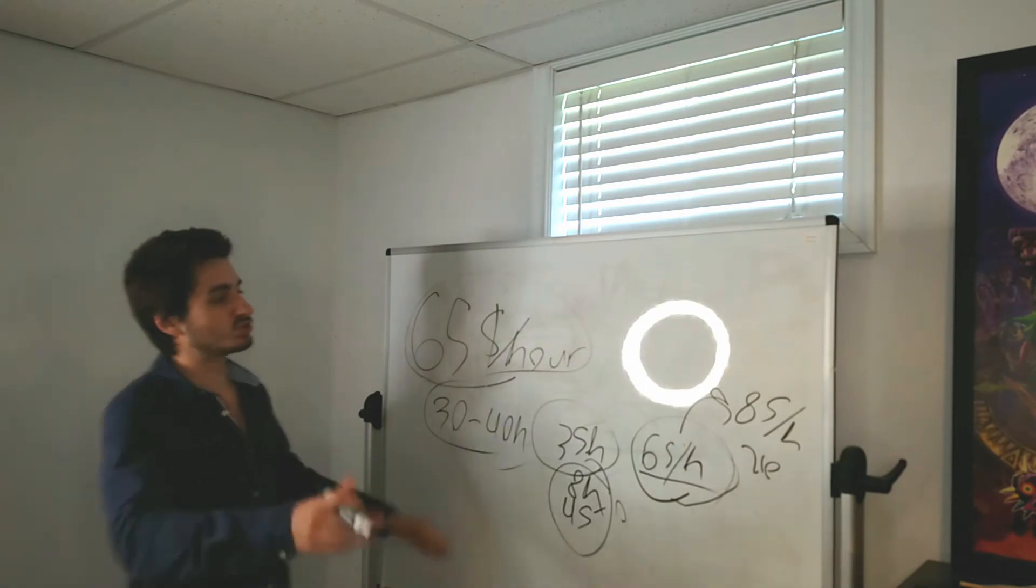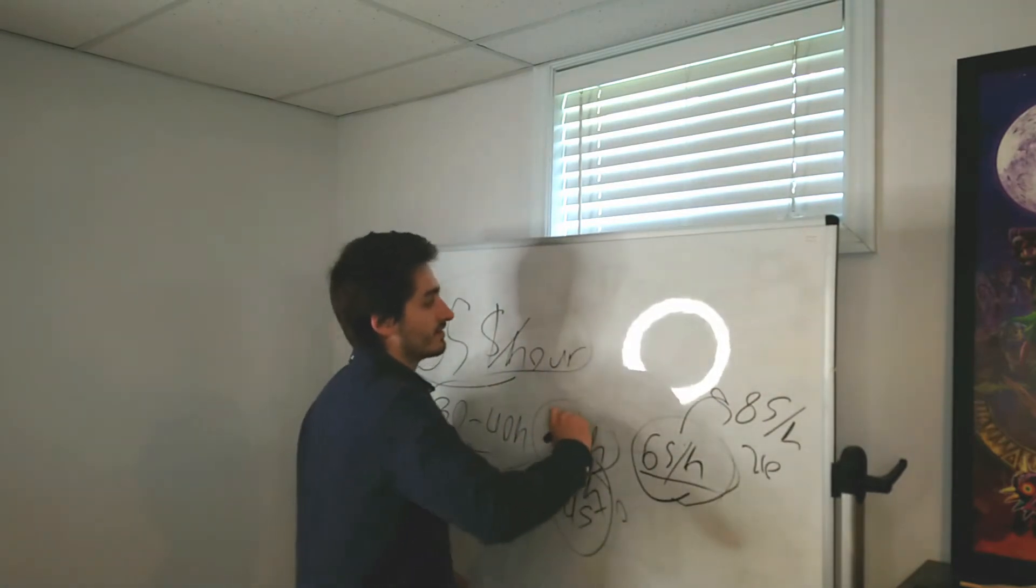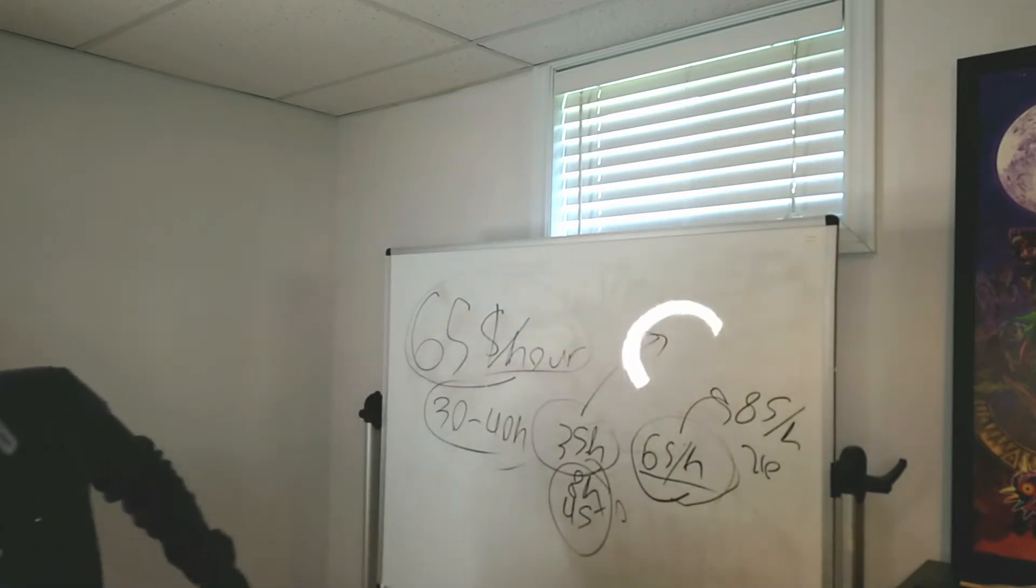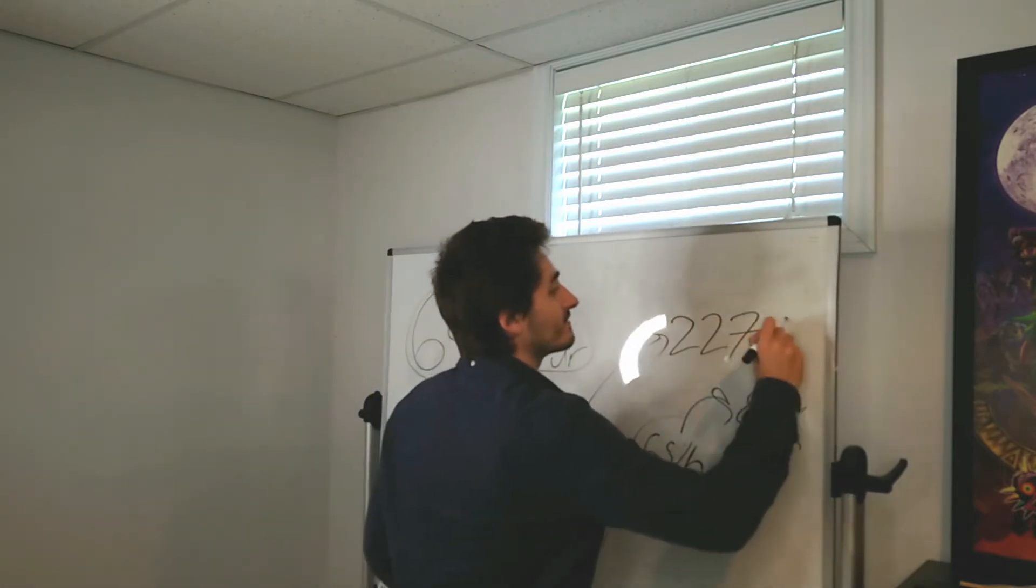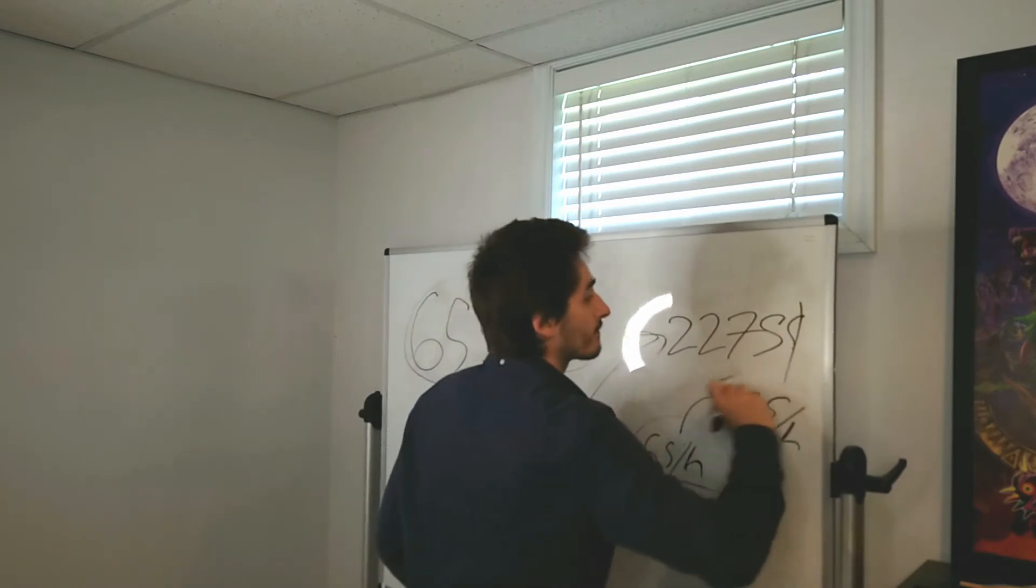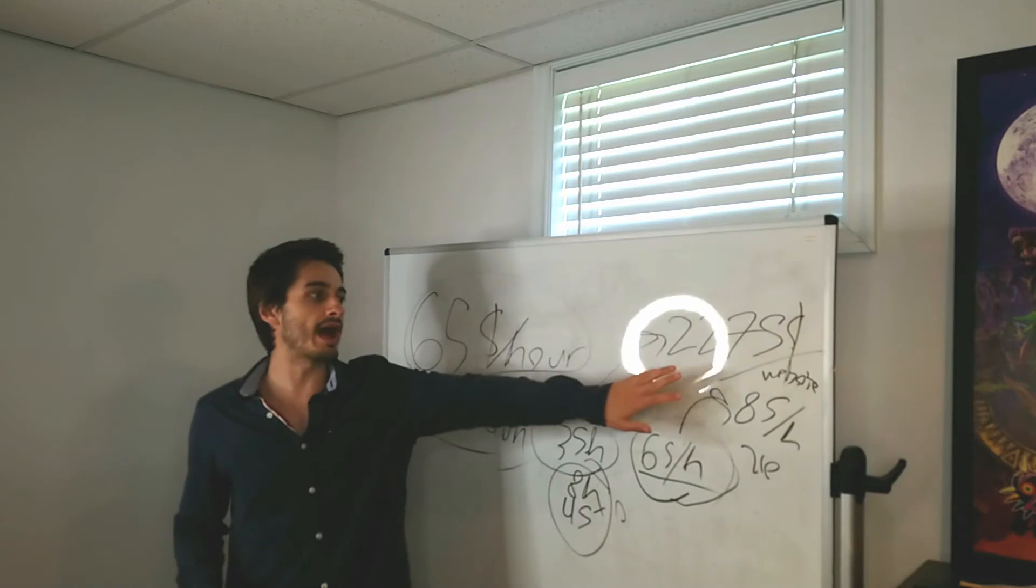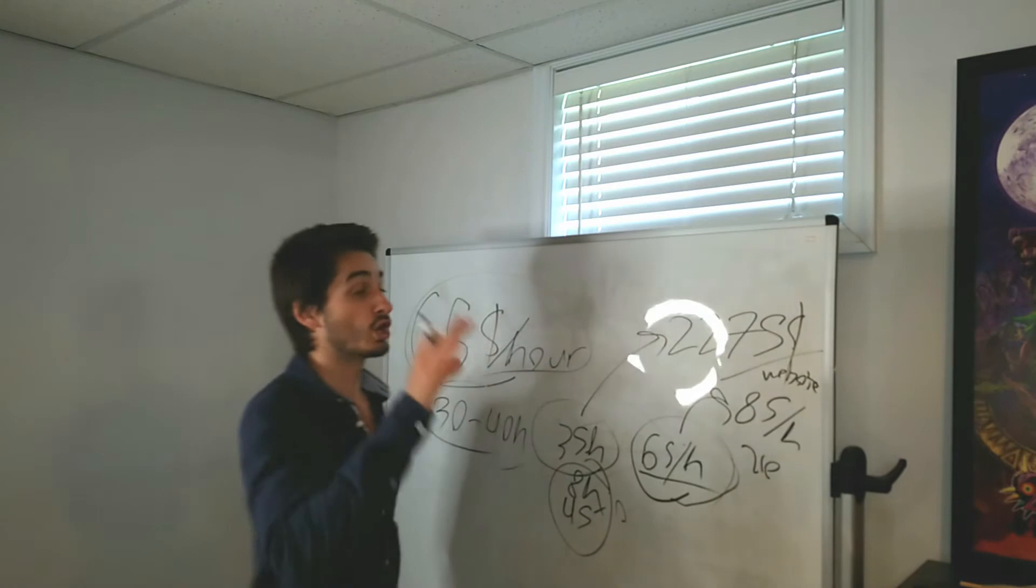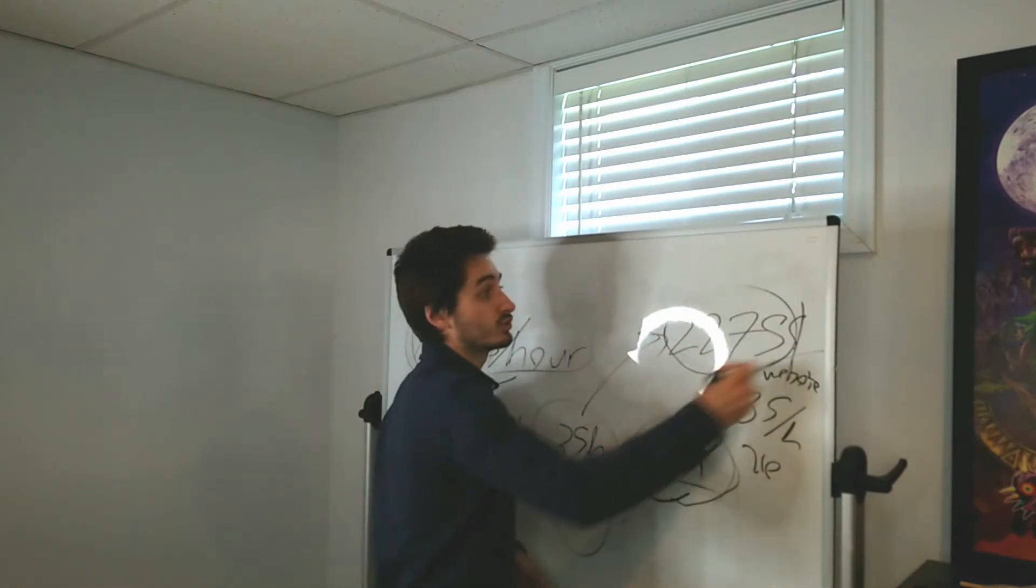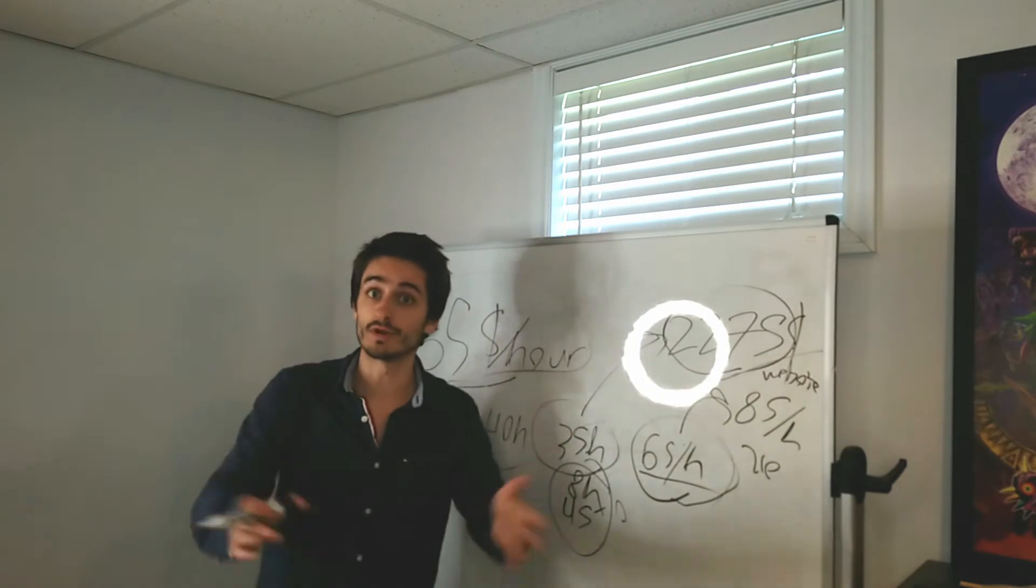So if we look at it, how much should you charge for a website? 35 hours at $65 an hour, that is an average of $2,275 per website. That should be your average project starting out. If you don't want to charge per hour and you want to charge per project, just charge $2,275. And that's it.